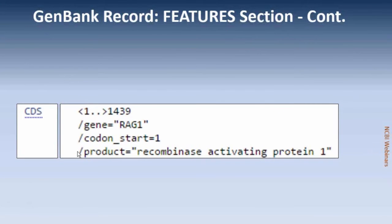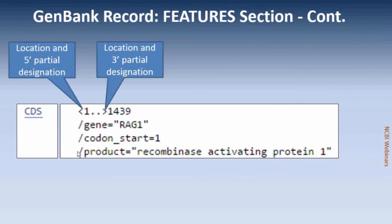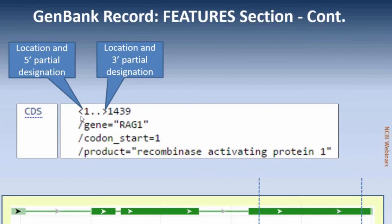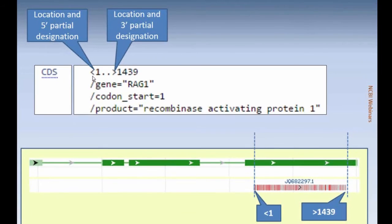If we look at the feature section in a little more detail, it's important that you indicate with the correct partial indicator whether it is five prime or three prime partial. When you look at the graphic representation of the RAG1 gene for this record, the first base starts at position 1, it is 1,439 bases long, and it is five prime and three prime incomplete.